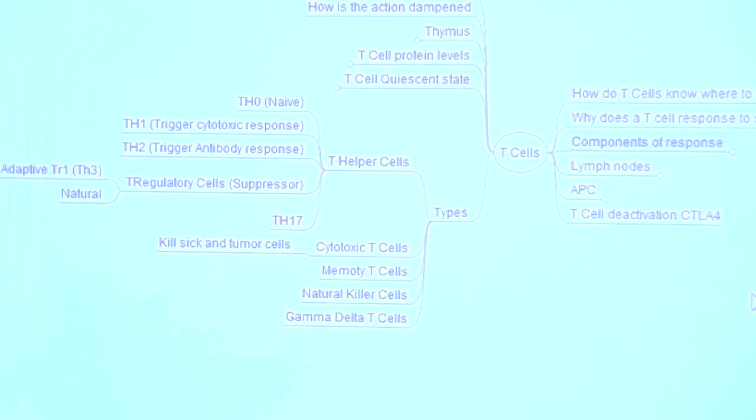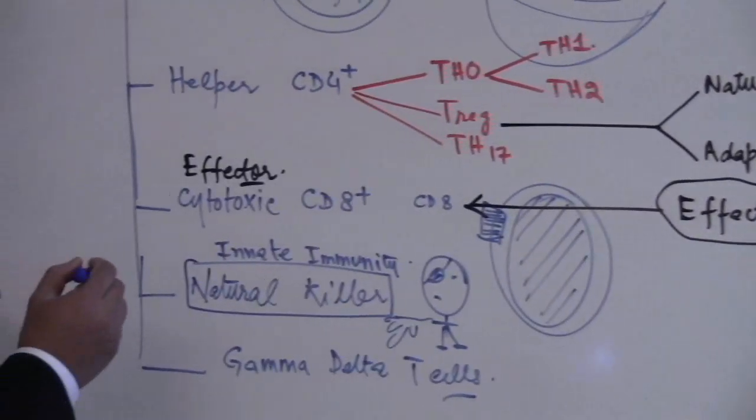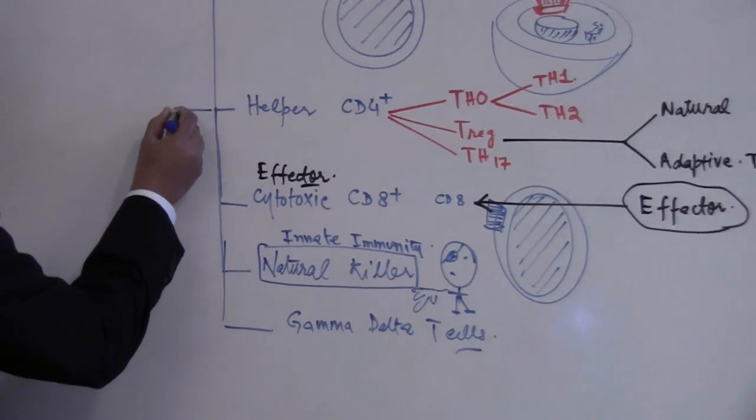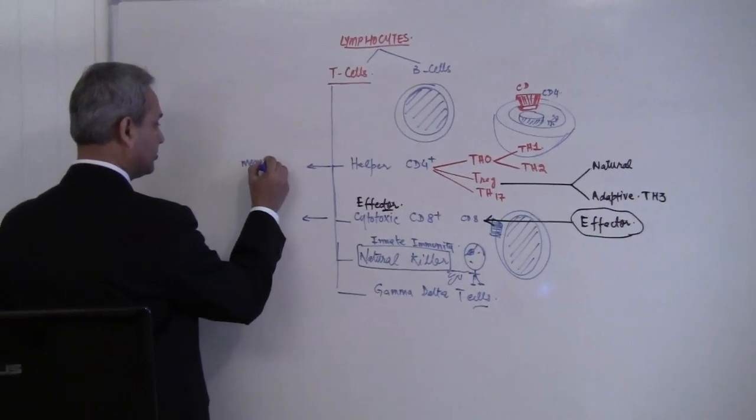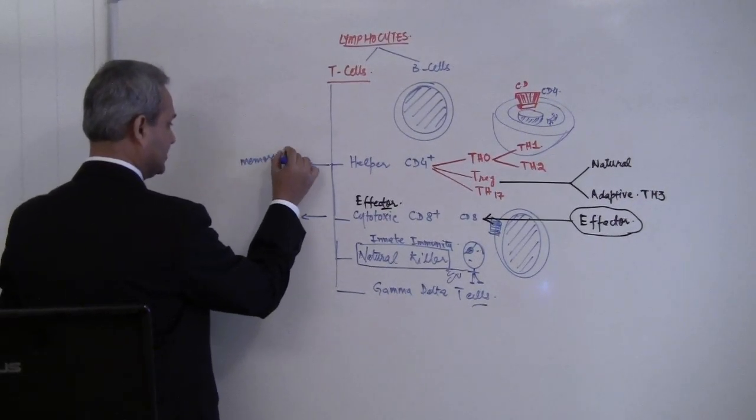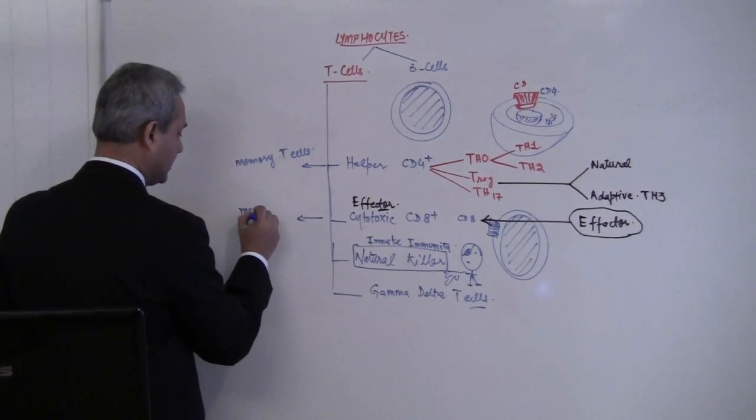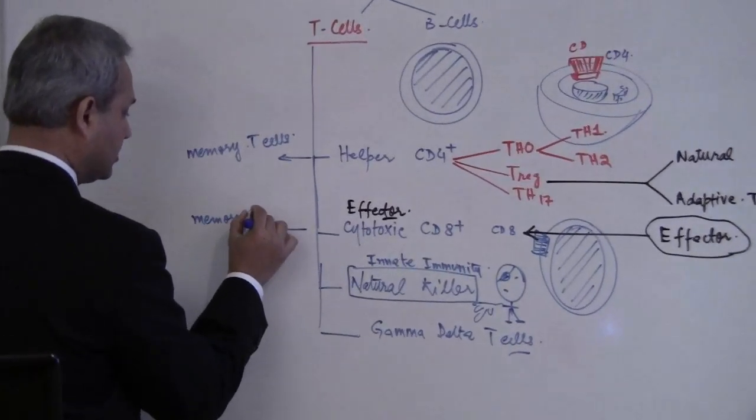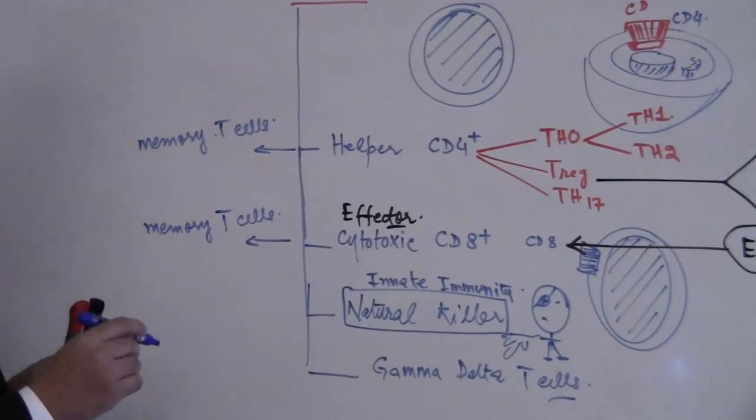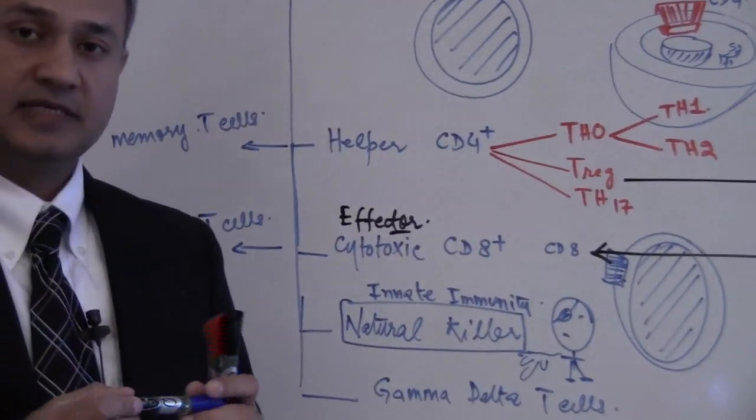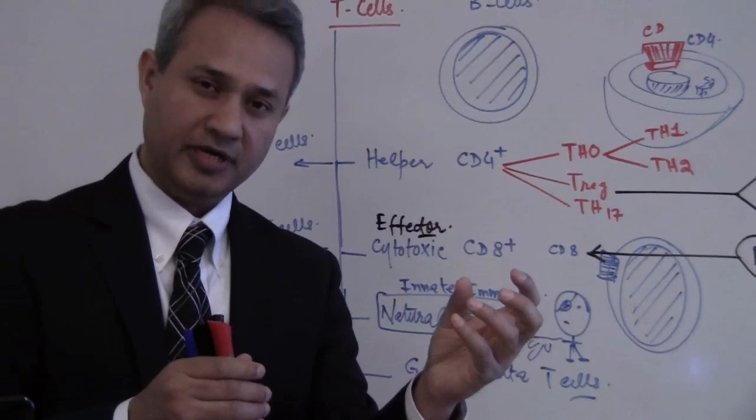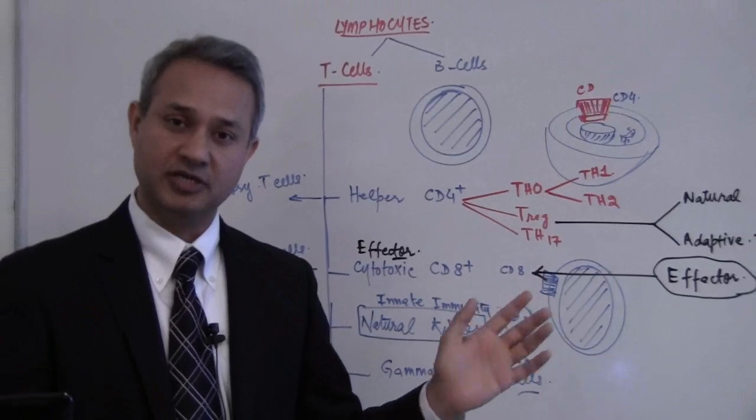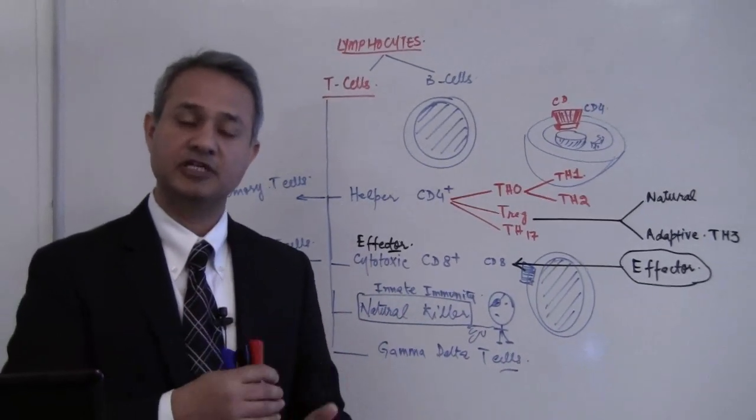On the board here, one type of T cell which I did not write is the memory T cell. T helper cells and cytotoxic T cells both can become memory T cells. There are some helper cells which after recognizing an antigen and becoming active can go dormant for years, and then if the same infection comes back, they would become active and start helping the immune system.